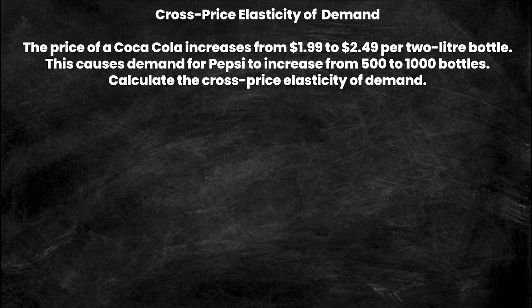So in front of us we have a problem that you would see on a practice sheet, maybe a midterm and exam. It gives you the price change of one good and the related quantity demanded change of the other good, and then it asks you to calculate the cross-price elasticity of demand with this information. So let's take a look at this problem. The price of Coca-Cola increases from $1.99 to $2.49 per two-liter bottle. This causes demand for Pepsi to increase from 500 to 1000 bottles. Calculate the cross-price elasticity of demand.